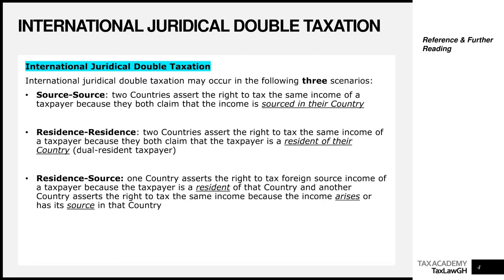Let's look at the residence-source conflict. As the name implies, this is where one country asserts the right to tax the foreign-source income of the taxpayer because the taxpayer is a resident of that country, and the other country asserts the right to tax the same income because the income arises or has its source in that country. For example, Ghana claims you are resident in Ghana so they want to tax you, while South Africa claims the income has its source in South Africa and they also want to collect tax. This leads to international juridical double taxation.